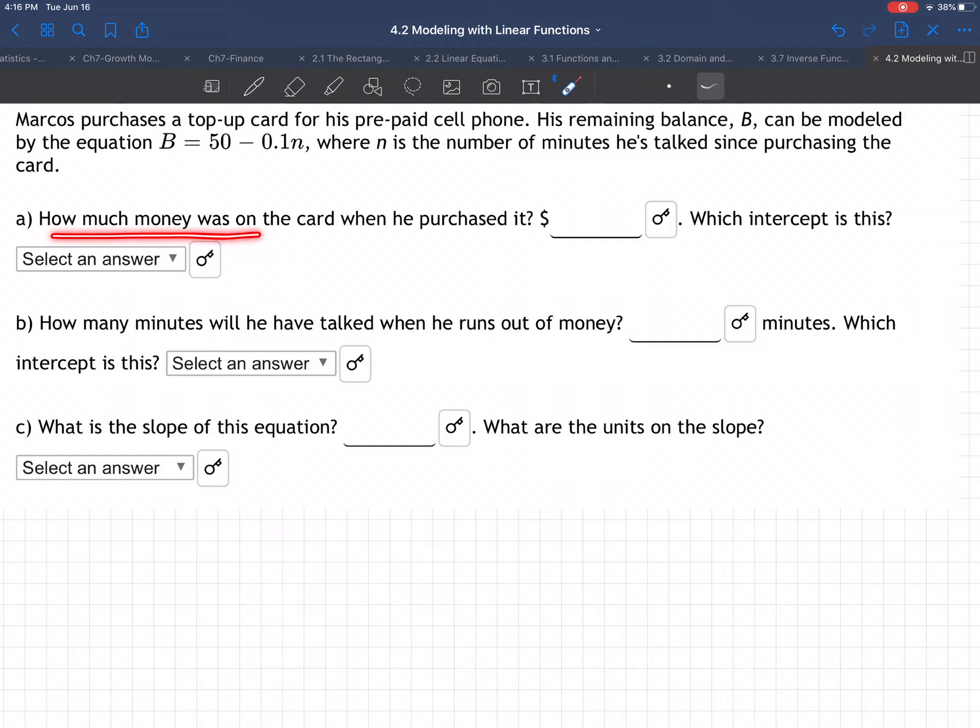How much money was on the card when he purchased it? Let's make sure we understand what this formula is saying. The balance is B, and N is the number of minutes he's talked.